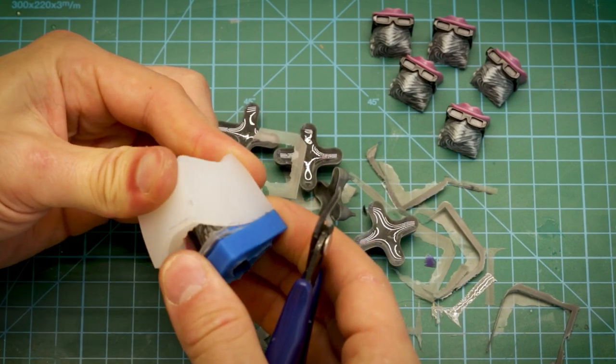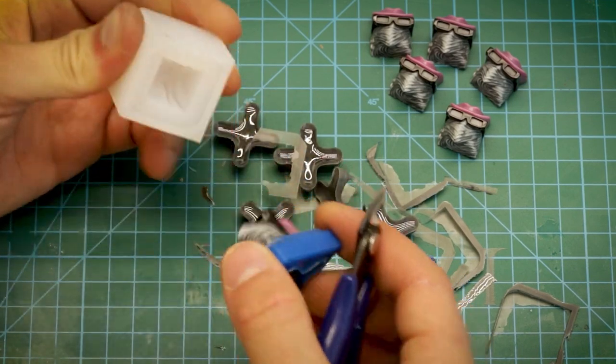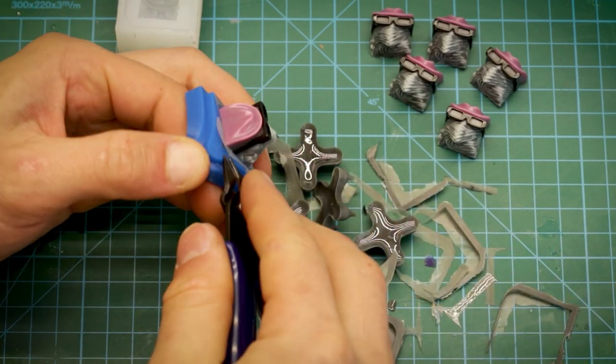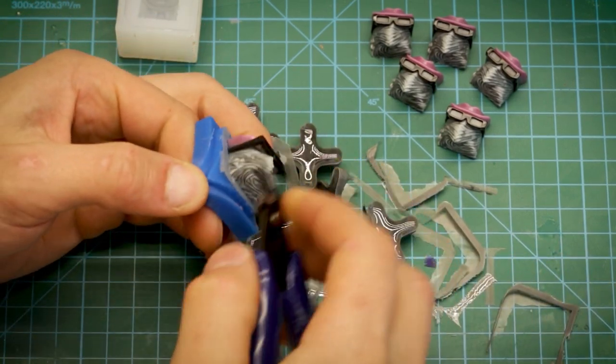Time to demold. Carefully clip your sprues using angle cutters, peel off any flashing, and clean up your molds for next time.